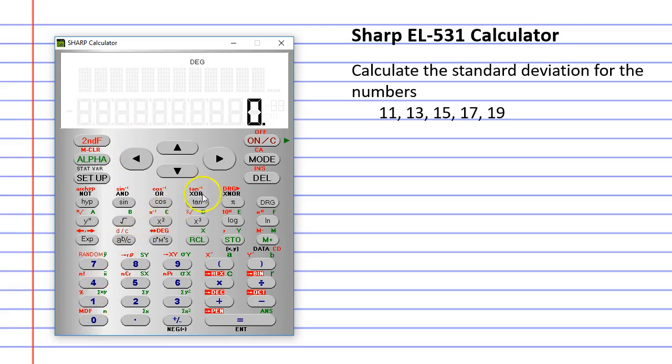Now we want to get into statistics mode. So we click mode, and you can see stat number 1, and we can also see SD, which stands for standard deviation number 0.